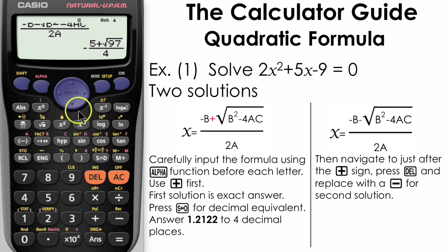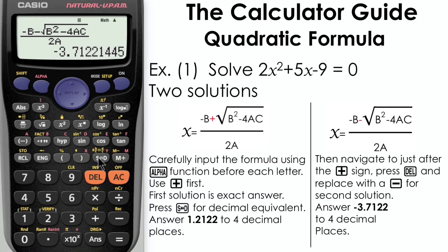Press equals and we have our exact answer. It is the negative version of our first solution. We want a decimal version, so we'll press S⇔D, and here we have our answer: -3.7122 to 4 decimal places.